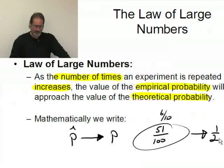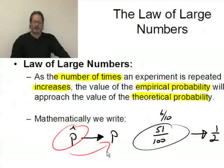That's the idea of the Law of Large Numbers. It simply says that as we increase the number of times that we do an experiment, the empirical probability gets closer and closer and closer to that theoretical probability, the true probability of an event.